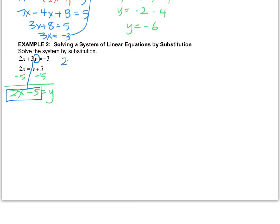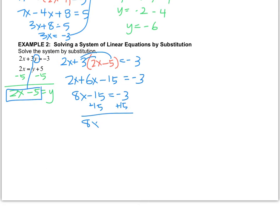I'm going to write 2x plus 3 times 2x minus 5 equals negative 3. This equation still says 2x plus 3y equals negative 3, but instead of y, I put 2x minus 5 because that's what y was equal to. Now you just do your calculations. You get 2x plus 6x minus 15 equals negative 3. That gives me 8x minus 15 equals negative 3. So I add 15, and I get 8x equals 12.